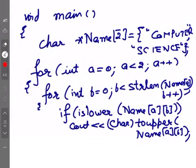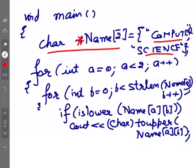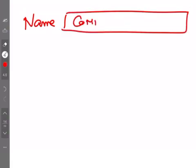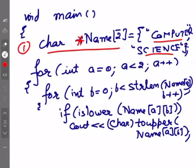In the question, inside main (assuming all headers are included), we have a string array — strings pointer name[2] — meaning there are two character arrays. The first value 'COMPUTER' goes to name[0] and 'SCIENCE' goes to name[1]. So we get an array of size 2 where name[0] is COMPUTER and name[1] is SCIENCE. Since it's a string, it will be null-terminated.